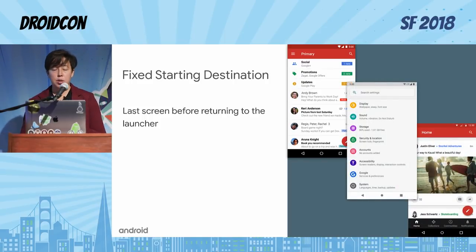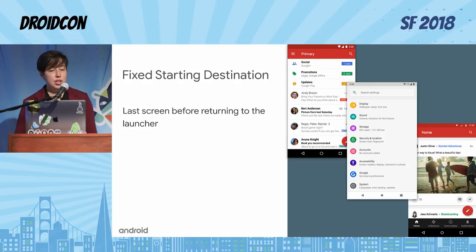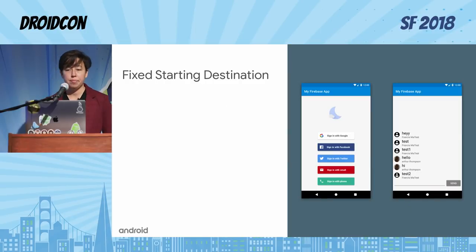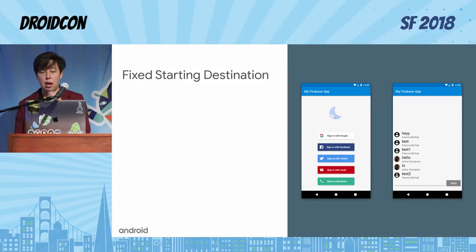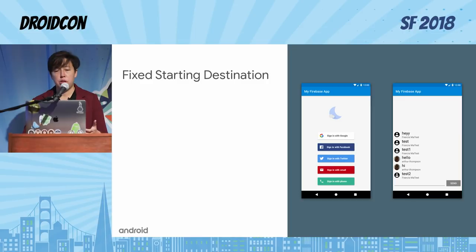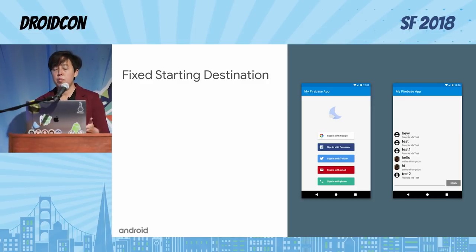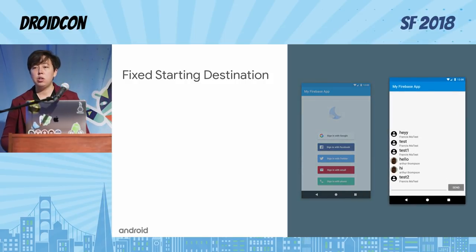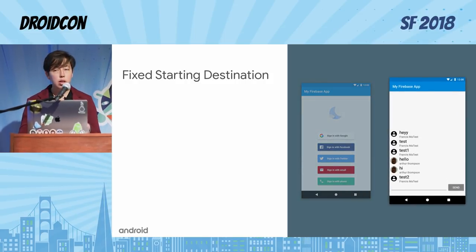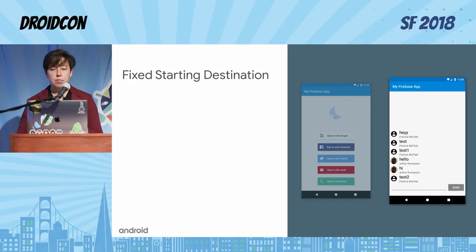Here are some examples — the Gmail inbox, for example. Importantly, the starting destination is also the last screen that the user should be primed to see before they return to the launcher. We get this question a lot: if you have a login screen, that's usually the first screen you're going to see, but then maybe you have a more generic home screen for your app. The starting destination will not include any conditional login flows or a tutorial when your user first enters your app. It'll actually be that home screen, not something like a login screen.